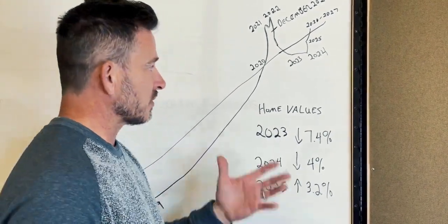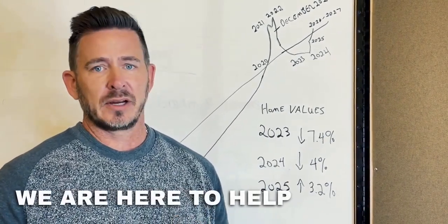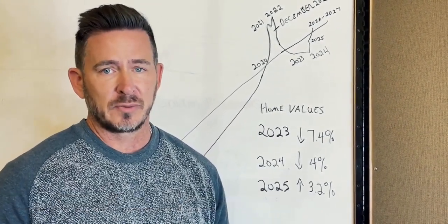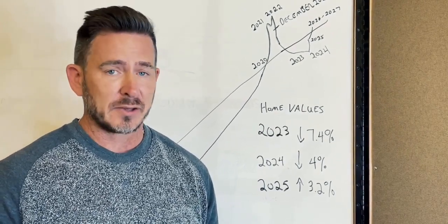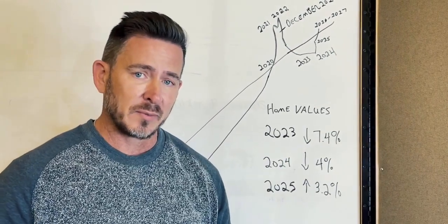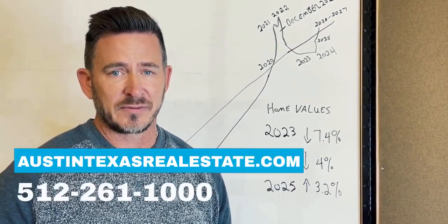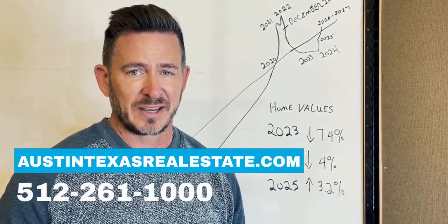So if you've got any questions on how this might impact you and your family, here to help, here to answer any questions. Love to talk strategy with you. Improvements you want to make to the house, different things like that, some timing that's best for you. Let us know. Either way, there's going to be opportunity in the market. We'd love to be a resource for you. Visit AustinTexasRealistic.com to reach us at 512-261-1000. Thanks.